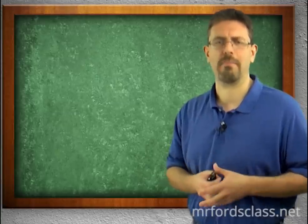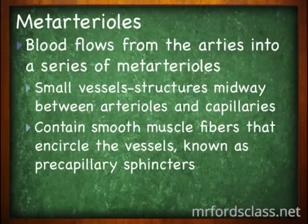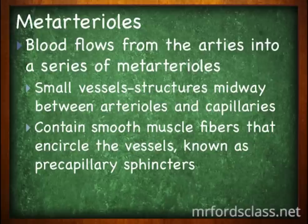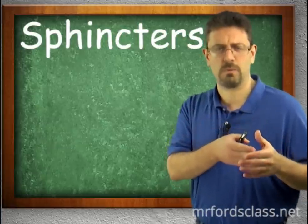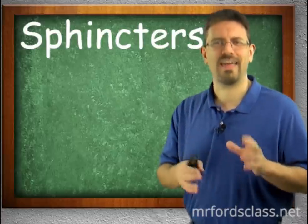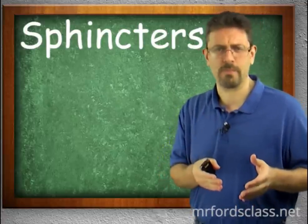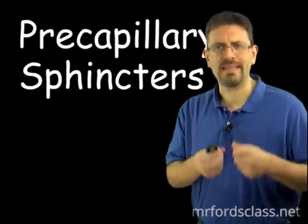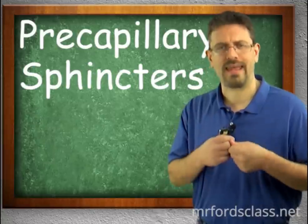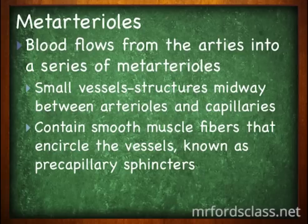Going even smaller, we have the meta-arterioles. Blood flows from arteries into meta-arterioles — small vessels with structures midway between arterioles and capillaries, a hybrid between the two. They contain smooth muscle fibers encircling the vessel known as precapillary sphincters, which increase or decrease the size of an opening, acting as a portal into the capillaries that can either open or close to allow blood through.